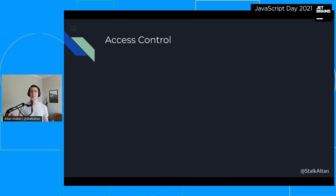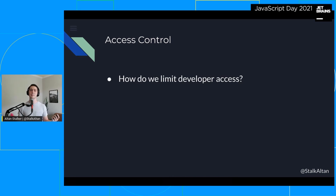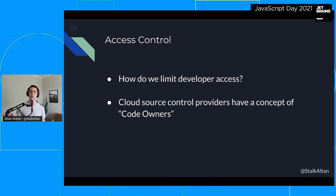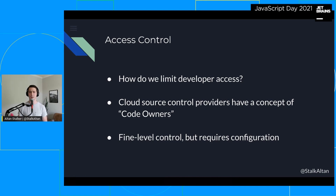Finally, your team will have to handle access control differently. The good news is that every major version control provider already has ways to handle this through permissioned reviewers. On large teams, it's important to limit people who lack context in new areas of the code. In a traditional repository setup, this is handled by access to the repository as a whole. In a monorepo, you'll need to implement something like GitHub's code owners to handle directory or even file-level control for pull request and merge request approvals.